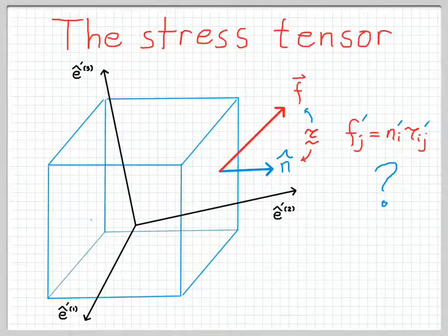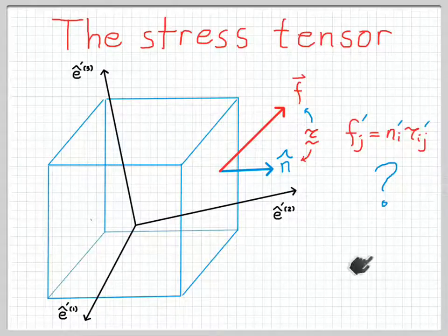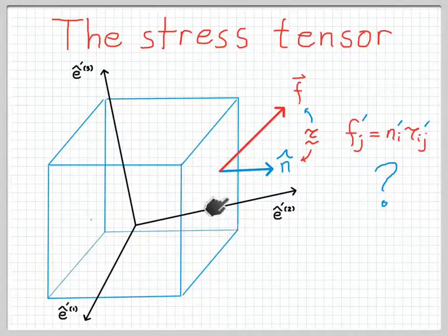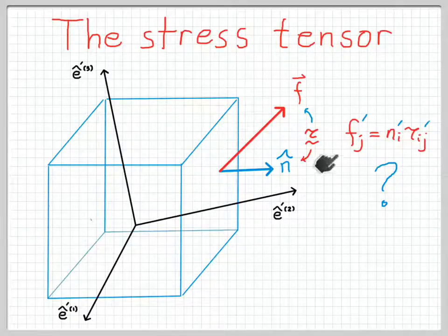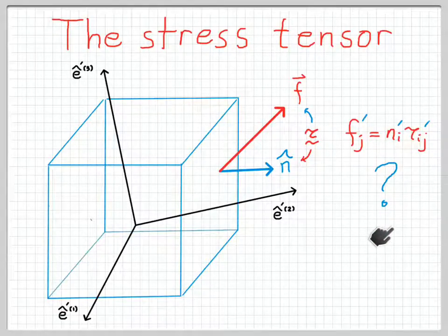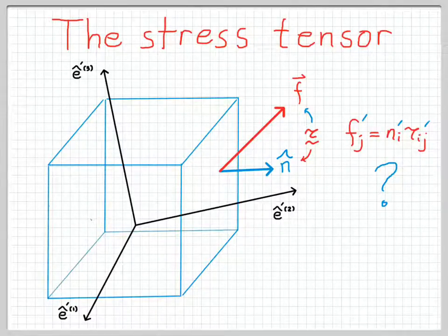What we would like to know, to address the question of whether the stress tensor really is a tensor or not, is what would happen if we looked at this whole relationship in a different reference frame. Here I've tilted the coordinates so that we have e'1, e'2, and e'3 as our coordinate axes in a new Cartesian coordinate system. The question becomes: if we measure the force, the unit vector, and the stress tensor in this new coordinate system, does this relationship still hold? If it does, then the stress tensor really is a tensor.